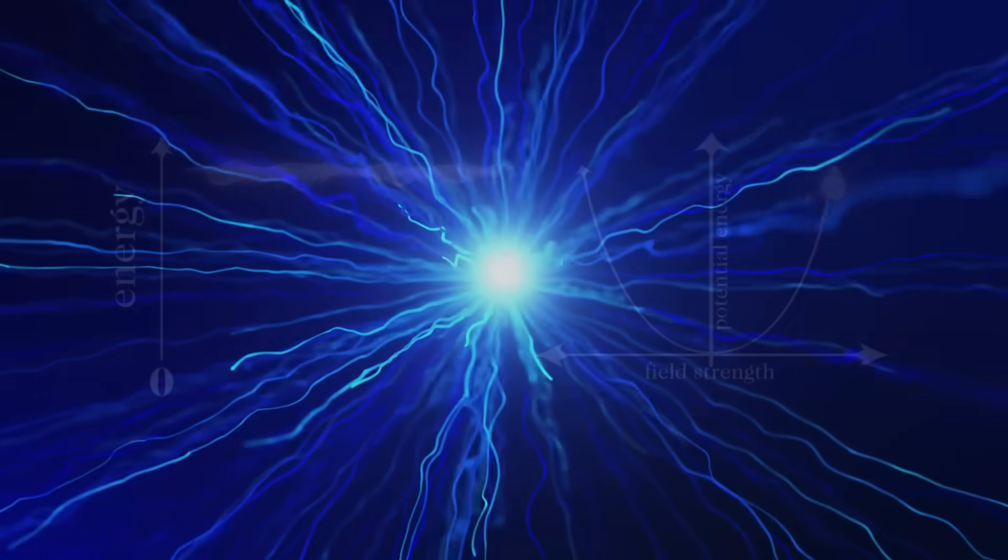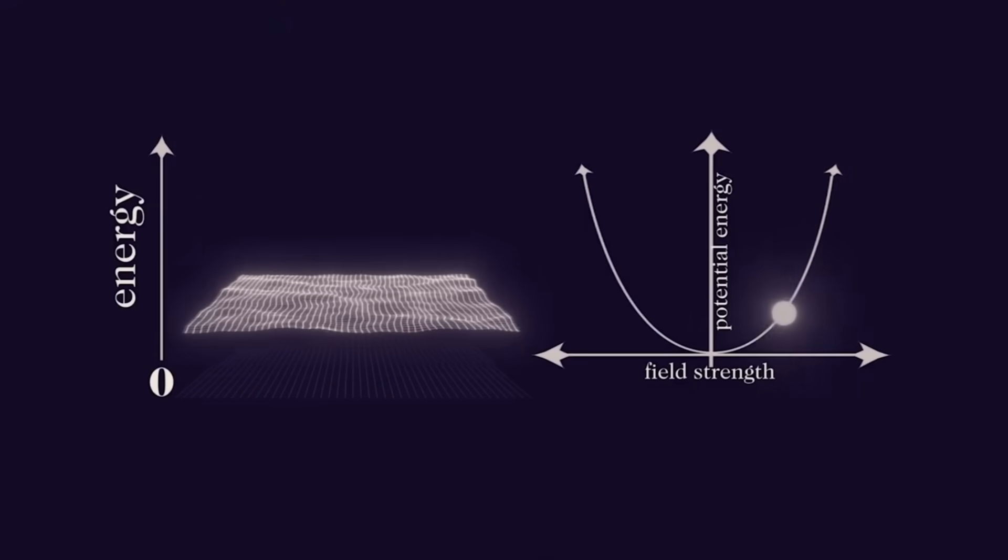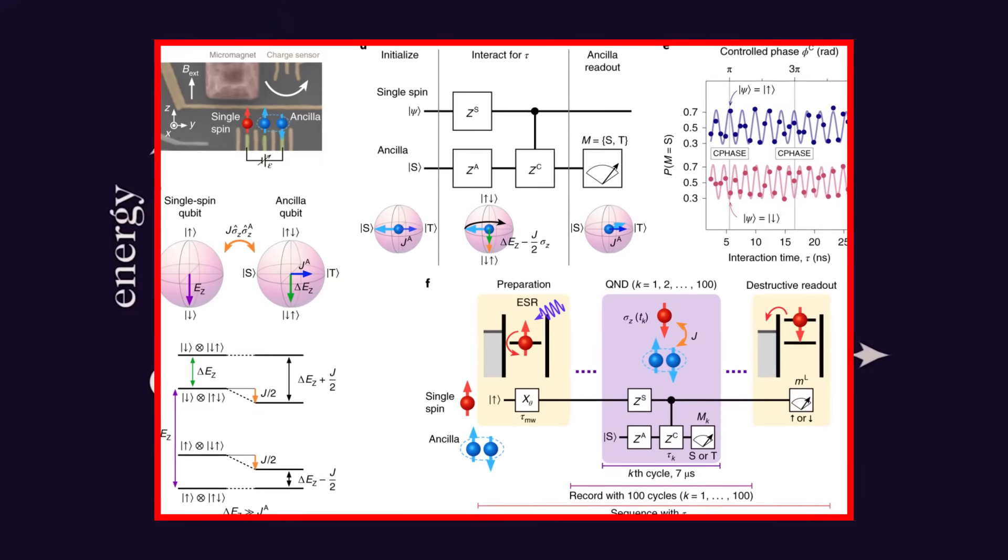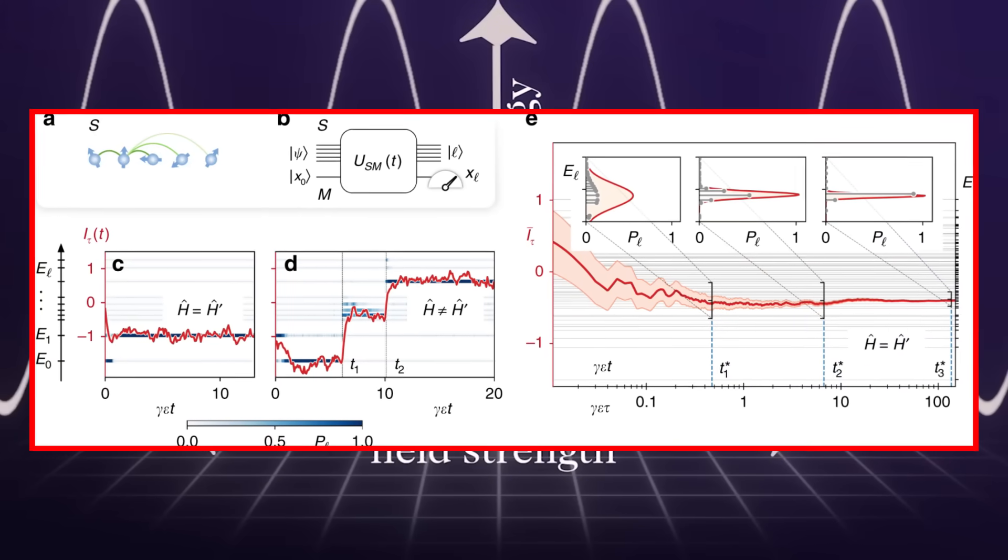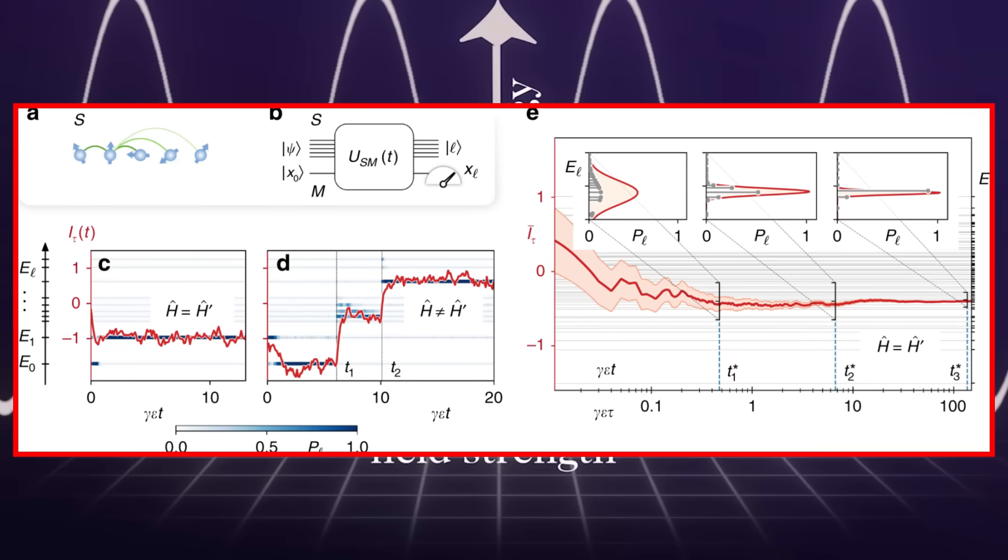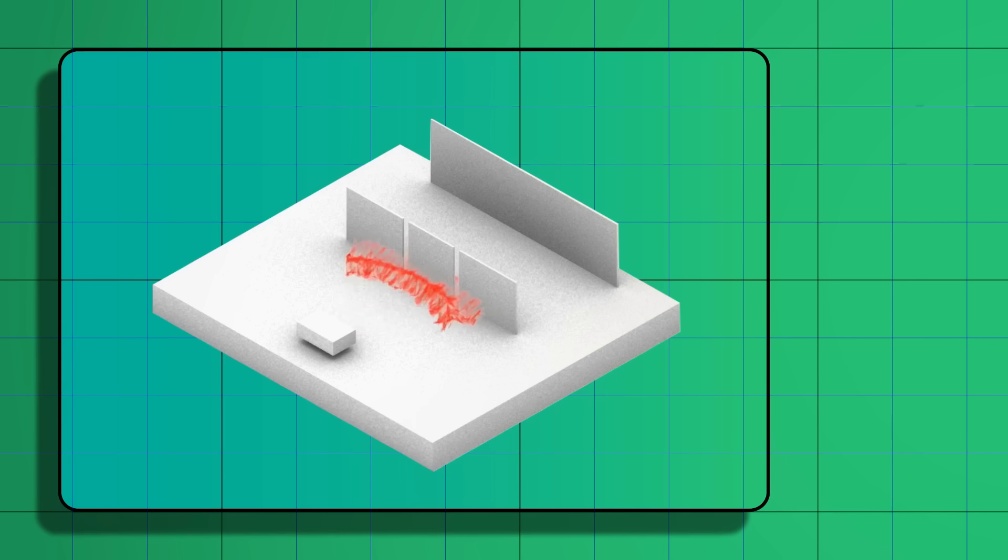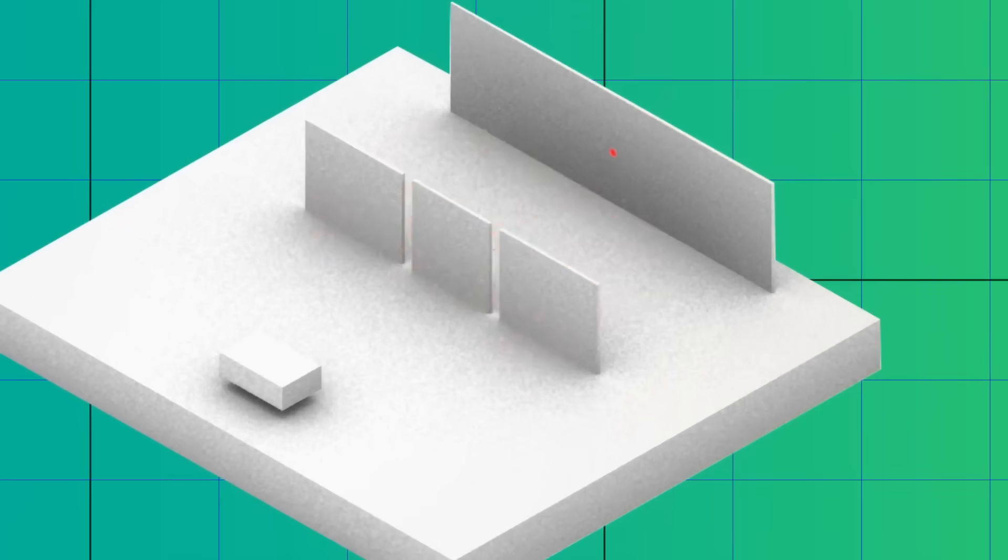With quantum computers pushing the boundaries of physics and axion research gaining momentum, we may be closer than ever to solving the dark matter mystery. But the real question is, have we already stumbled upon the answer without realizing it? If the data from quantum experiments continues to show unexplained signals, scientists will have to consider a radical possibility that axions aren't just out there in the cosmos, but that we've already brought them into our labs.